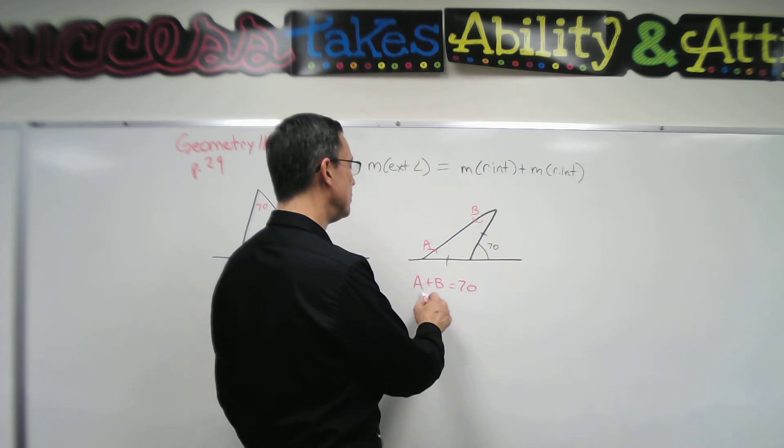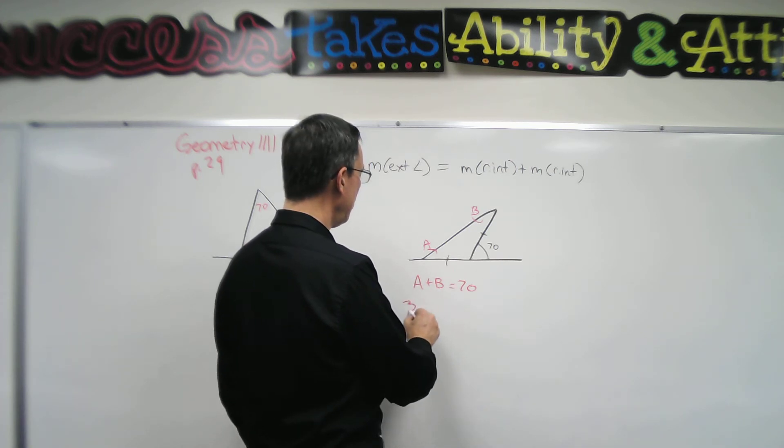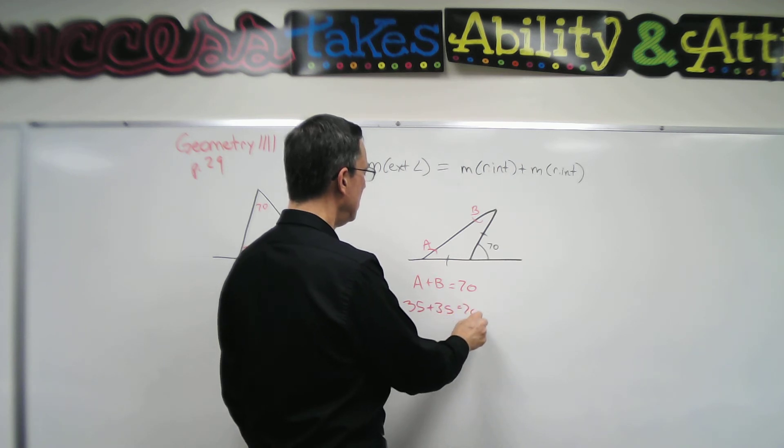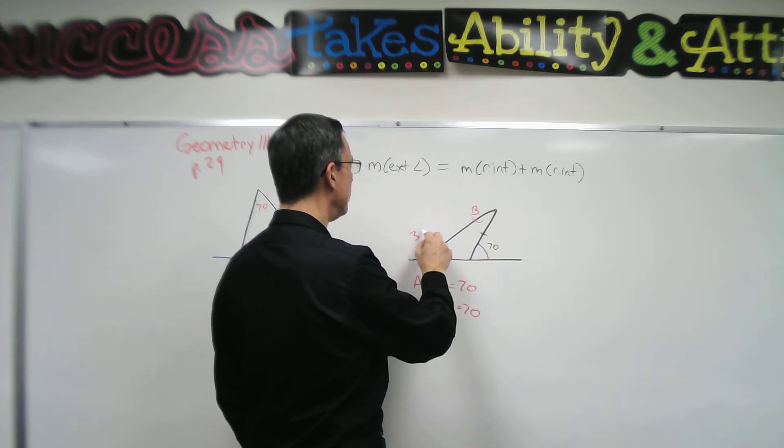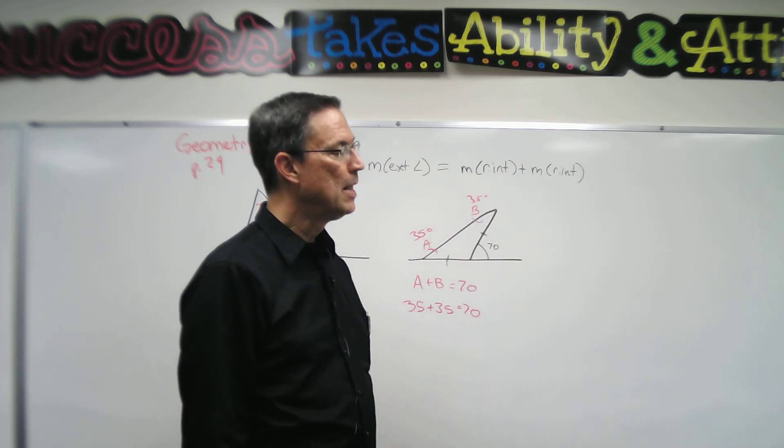So what two numbers, what number added to itself would equal 70? And that would have to be 35. So 35 degrees for each of those angles.